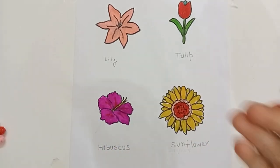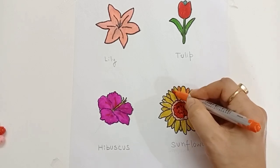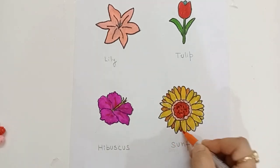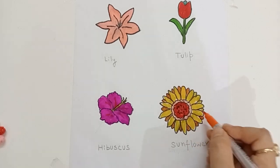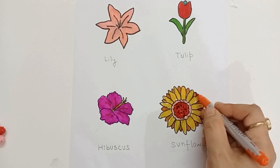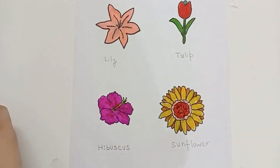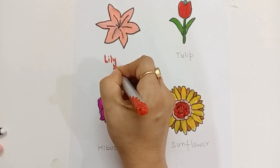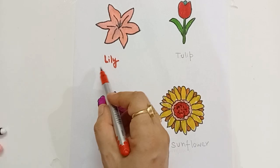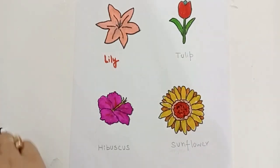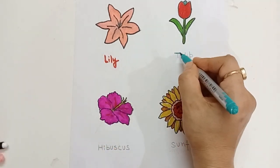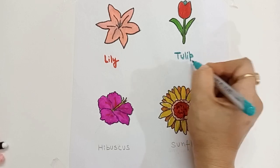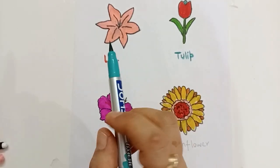Orange color, yellow color. L for Lily. Lily is a flower. Red color. Pick a green color. T for Tulip. Tulip is also a flower.